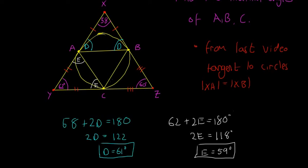Since we know angle Z is 60 degrees and the two base angles are the same, this is also going to be 60 and 60 degrees. This is actually an equilateral triangle, so they're all 60 degrees. Now that we have all these angles, we should be able to find the inside angles.